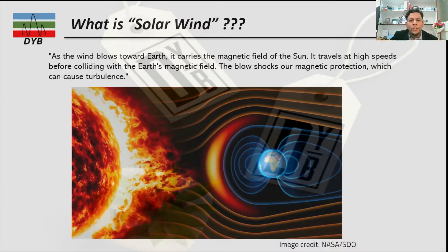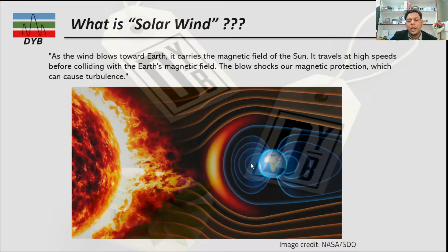Before we go into the details, we have to understand what solar wind is. Solar wind is a wind which blows from the Sun toward the solar system. When we are talking about the Earth, the solar wind coming from the Sun enters the orbit of the Earth and affects the magnetic field of the Earth.